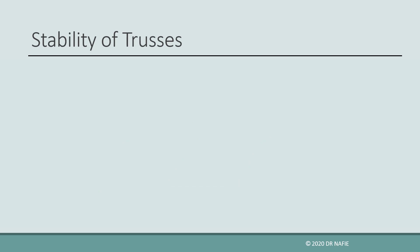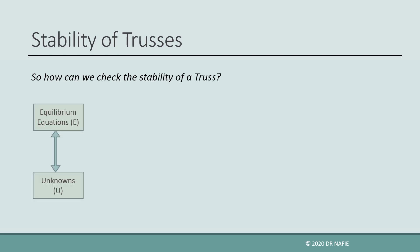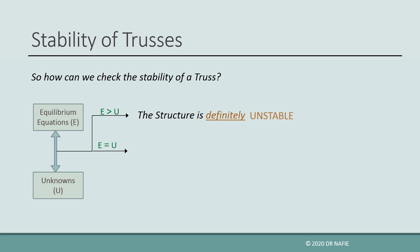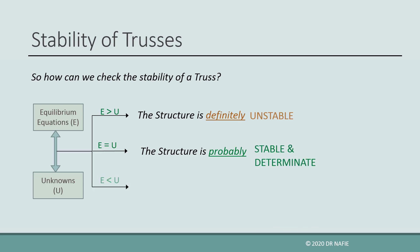To investigate the stability and determinacy of a truss, we use the same procedure as the general method used for frames. First, we compare the number of unknowns and the number of equilibrium equations. If the number of equilibrium equations is larger than the number of unknowns, then the structure is definitely unstable. If they are equal, then the structure is probably stable and determinate. If the number of equilibrium equations is less than the number of unknowns, then the structure is probably stable but indeterminate.